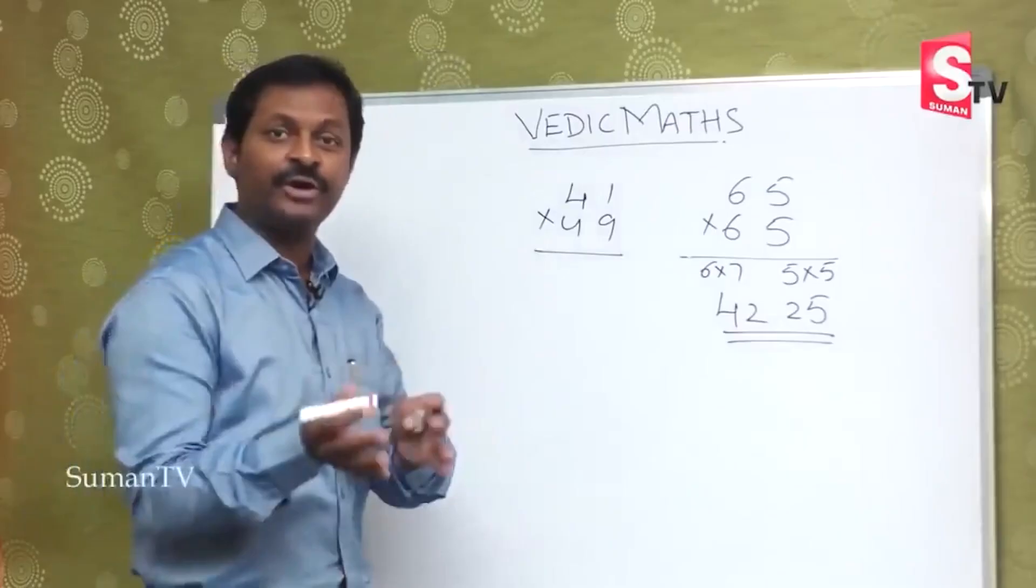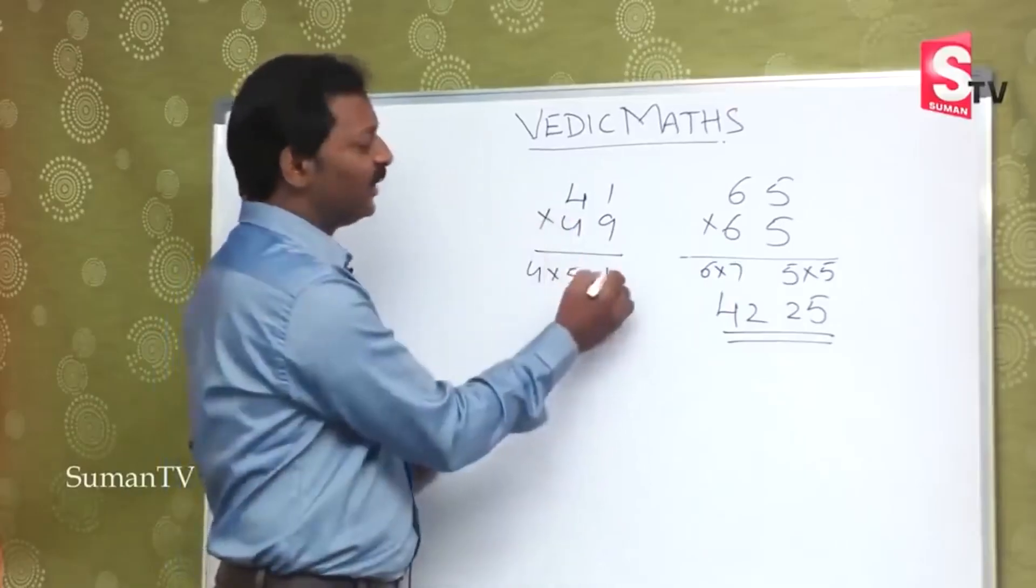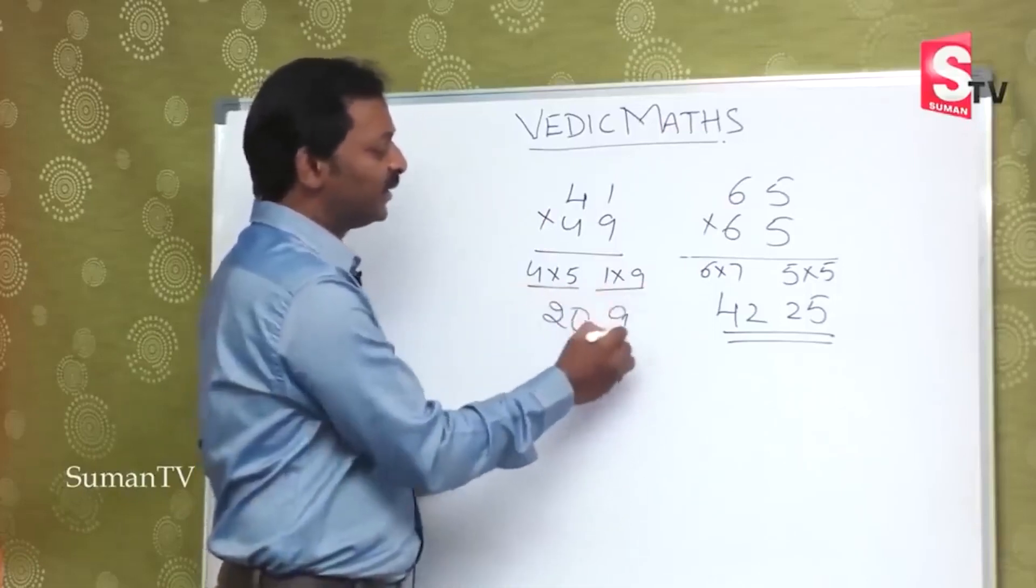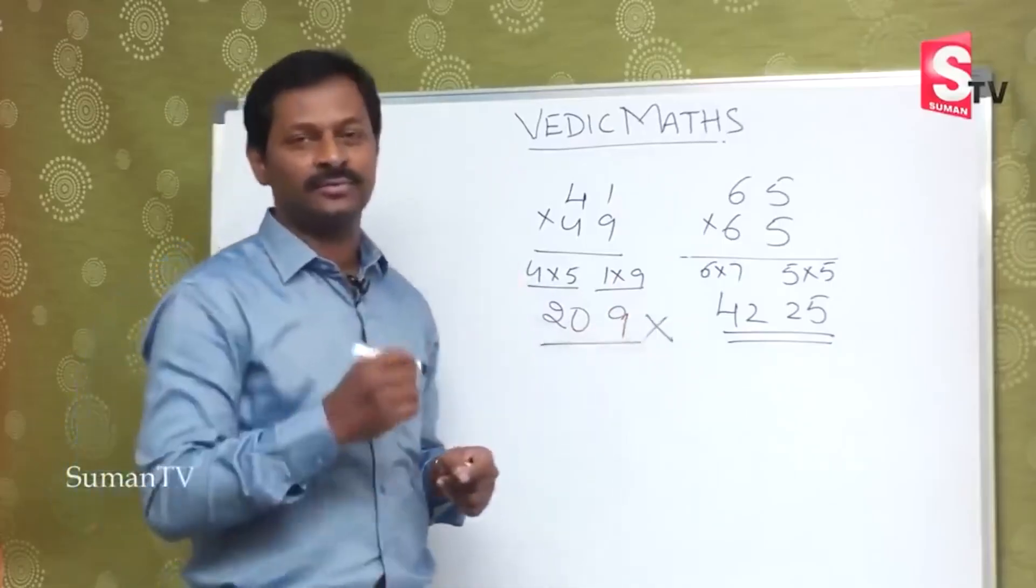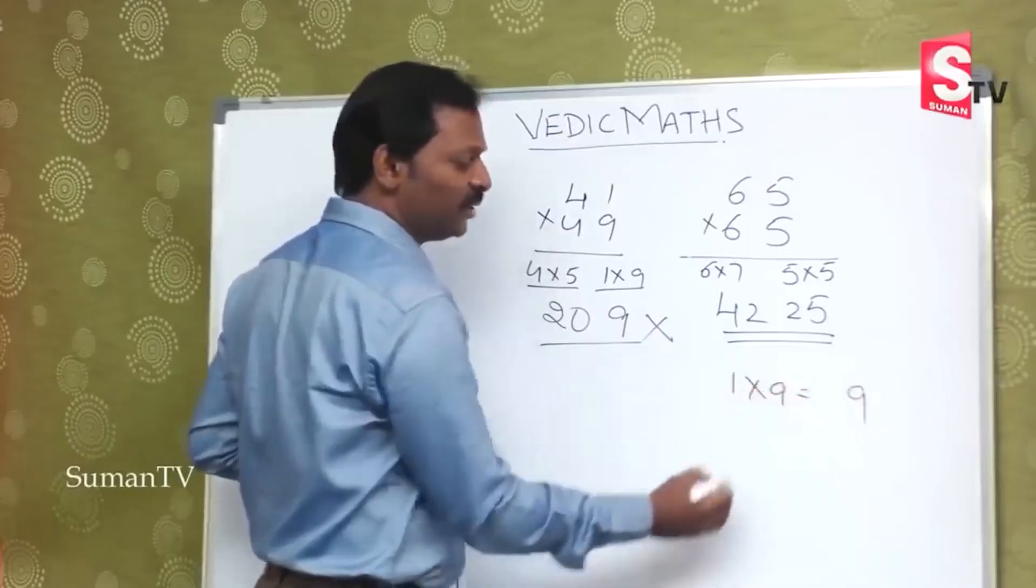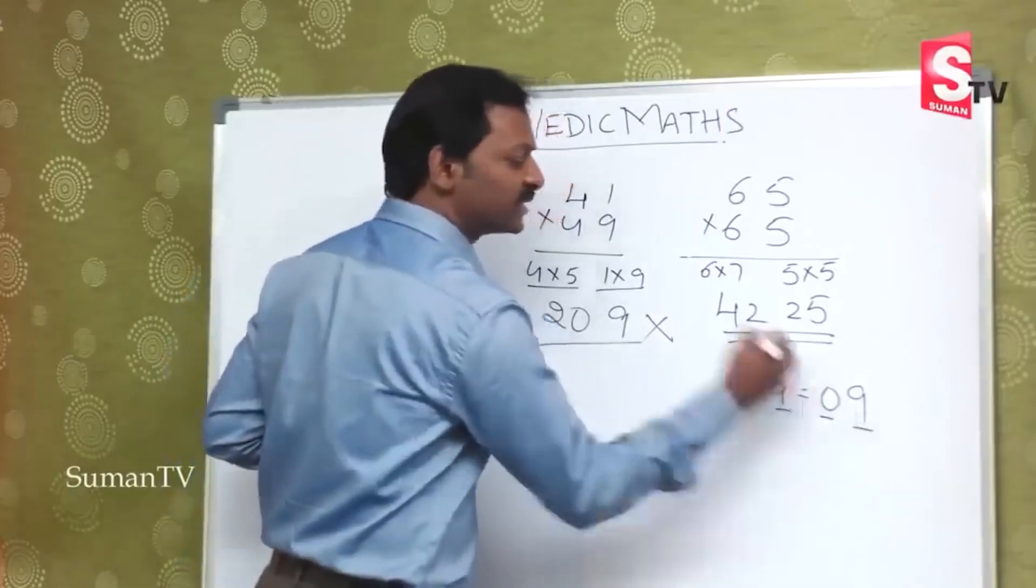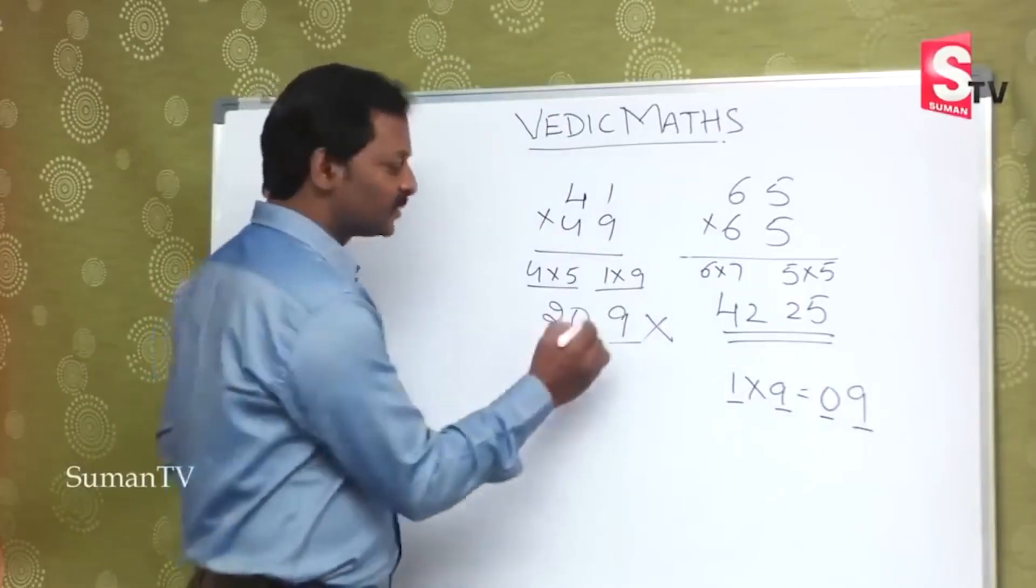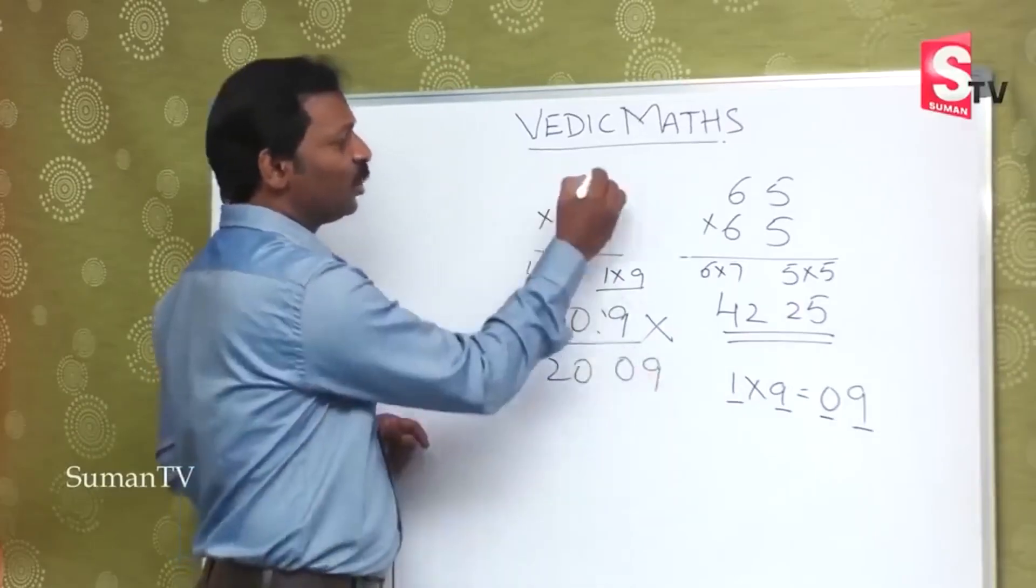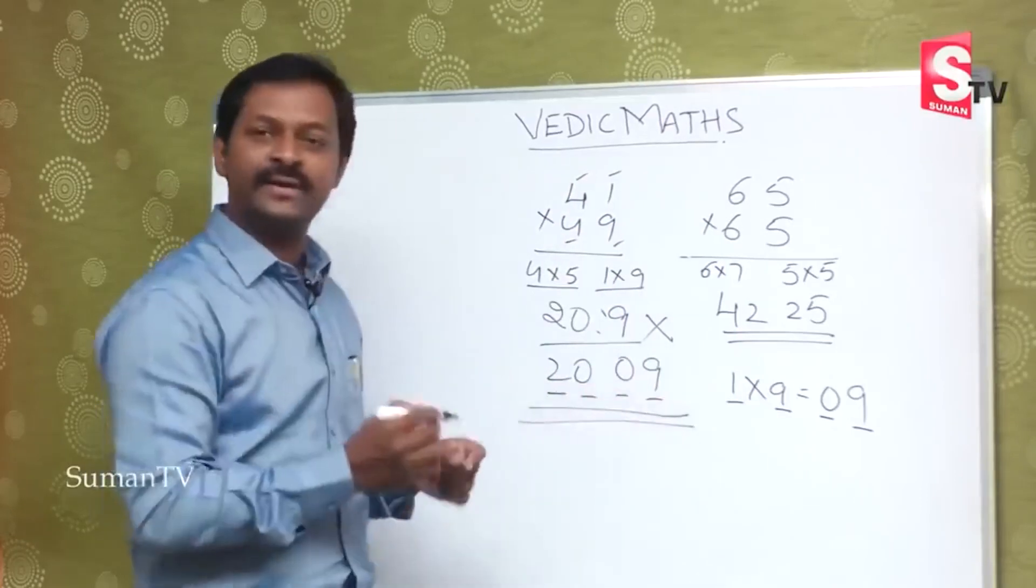4 and 4. 4 into next number, that is 5. 4 into 5, and 1 and 9 is given, 1 into 9. So 4, 5 is 20, and 1, 9 is 9, which is a wrong answer. Why? Actually 1 into 9 is equal to 9. Because of 1 and 1, two digits in the question, the answer also must have been 2 digits. So this is the right answer. This is 20, this is 0, 9. So total 1, 2, 3, 4 digits. Answer should have 4 digits. This is the right answer.